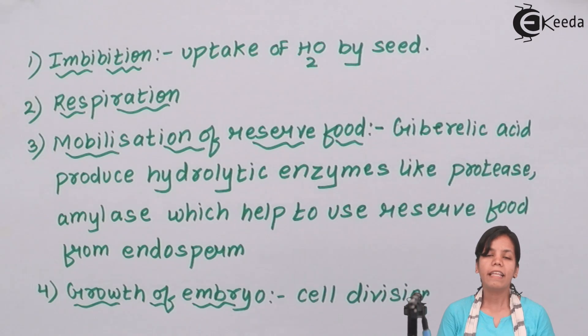So students, in this part of the chapter we have studied how different stages like imbibition, respiration, mobilization of food material and growth of the embryo comprise the growth of the plant. And I hope you all are clear about various stages of seed dormancy. Thank you.